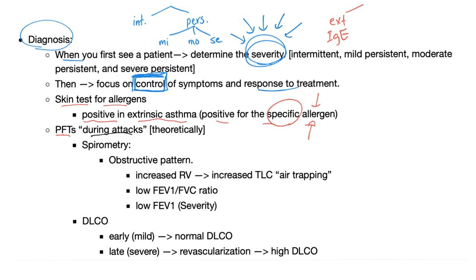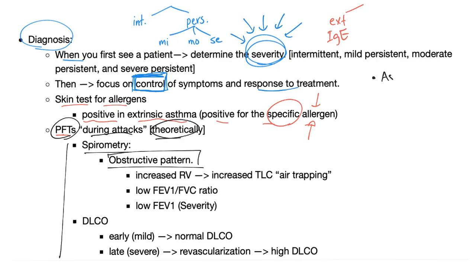Pulmonary function tests — if done during an attack, theoretically you'd see changes, but patients aren't sent to the lab mid-attack. When done while the patient is not in an attack, PFTs are usually normal, so this is largely academic. Spirometry shows an obstructive pattern because asthma is obstructive lung disease. There are four obstructive lung diseases: bronchial asthma, chronic bronchitis, emphysema, and bronchiectasis. Bronchitis and emphysema together are called COPD.